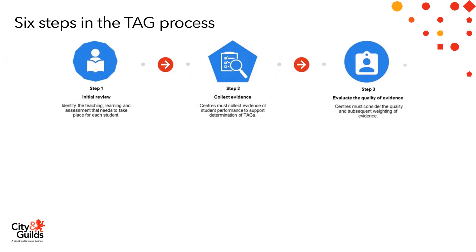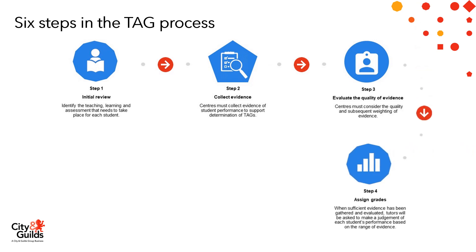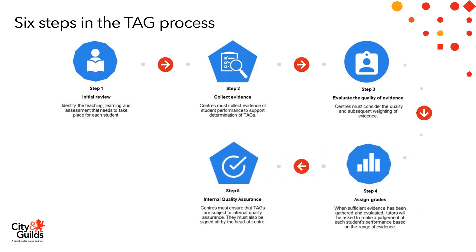Step 3: Evaluate the quality of evidence – centres must consider the quality and subsequent weighting of evidence. Step 4: Assign grades – when sufficient evidence has been gathered and evaluated, tutors will be asked to make a judgement of each student's performance based on the range of evidence. Step 5: Internal Quality Assurance – centres must ensure that TAGS are subject to Internal Quality Assurance and must also be signed off by the Head of Centre.